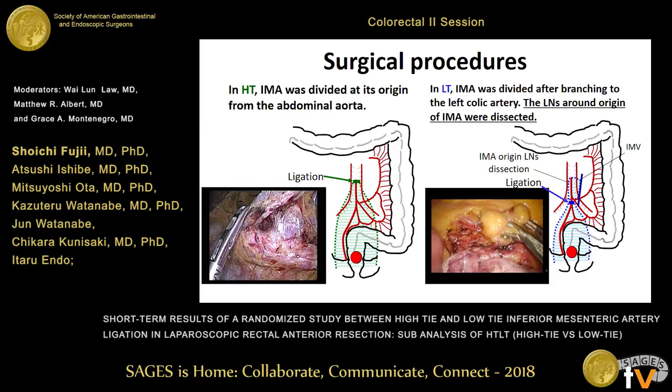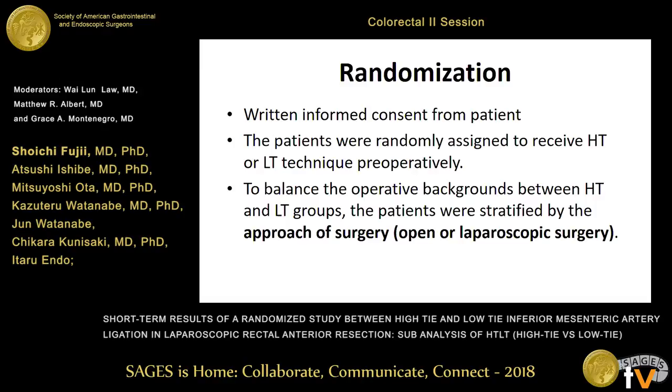In the high-tie group, IMA was divided at its origin from the abdominal aorta. In the low-tie group, IMA was divided after branching to the left colic artery, and the lymph nodes around the origin of IMA were dissected. A stratified factor for randomization was surgical approach: open or laparoscopic surgery.